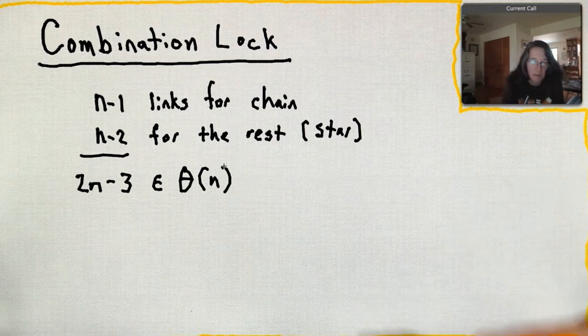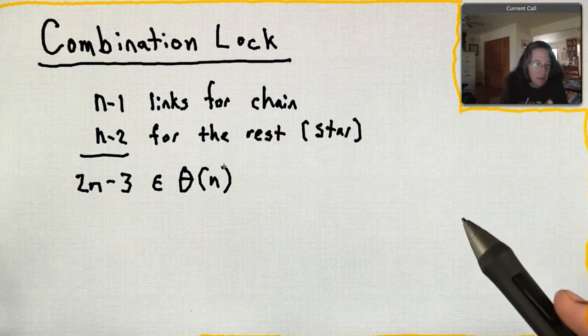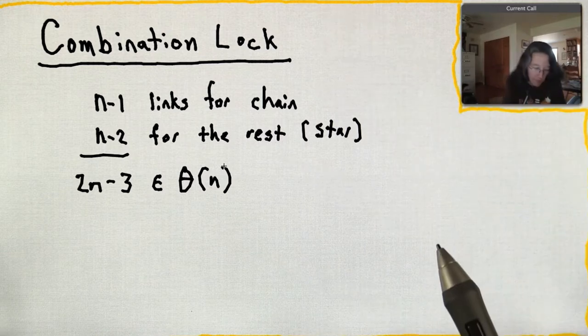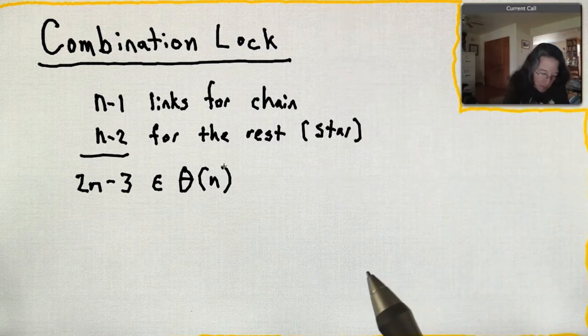Another way to think about it - one thing I like to do with more complicated graphs is, what happens when you add one more edge? You have your combination lock, and you add another edge, you're going to add two more nodes.